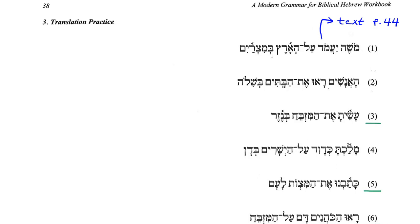The first exercise has a Yiktol verb in it. In chapter 9, we learn how the katal, or the perfect verb, is put together. We have not yet had the Yiktol in terms of how to construct it, so in order to parse this we just have to go to our tables — in this case the table on page 44 of the textbook. I'm not going to spend a lot of time on the ones that have Yiktol verbs, because chapter 9 is where we're introduced to the katal.